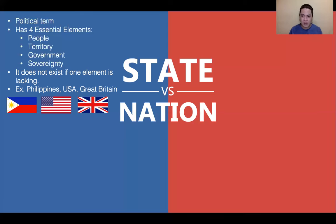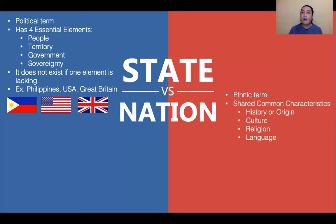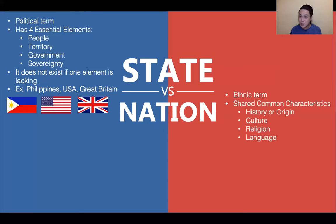Now let's go to nation. Comparing to state, nation is an ethnic term, while state is a political term. Nation refers to shared common characteristics — the same history or origin, the same culture, the same religion, or the same language. Even if you only share one of these characteristics, like one common history, you can be called a nation.